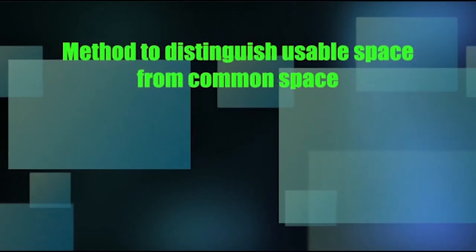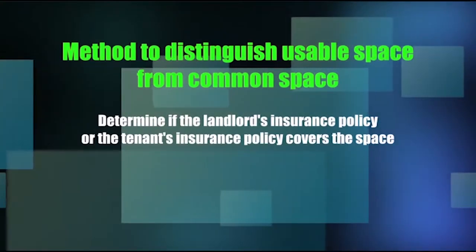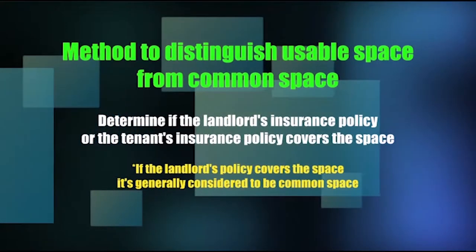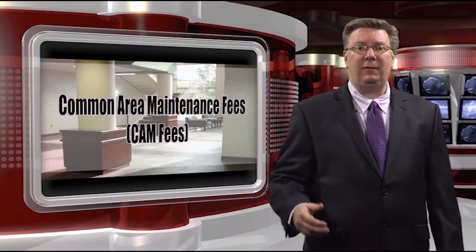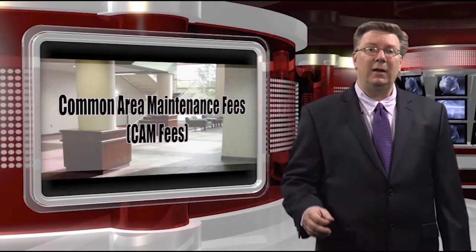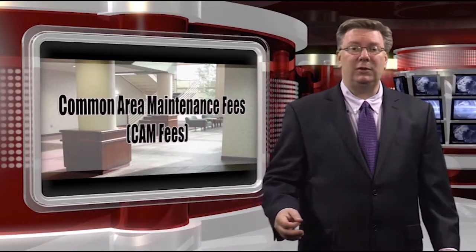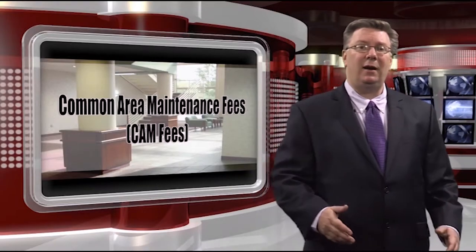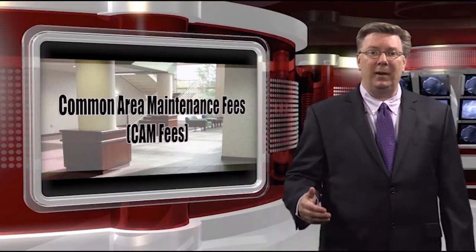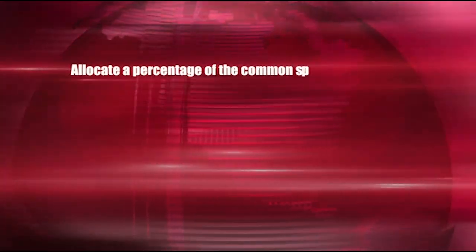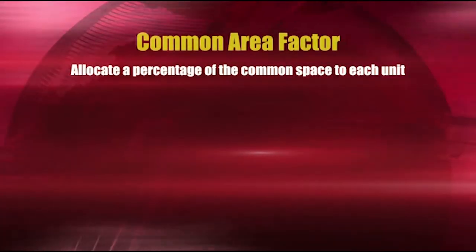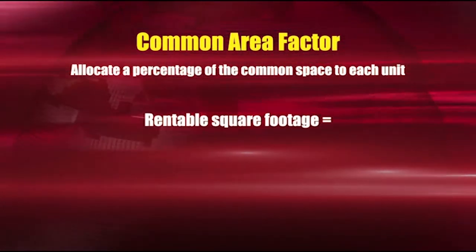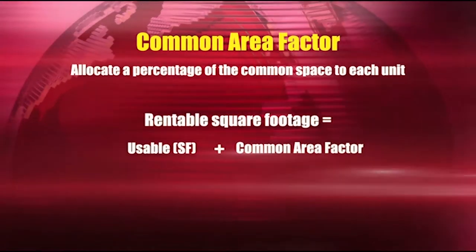One method of distinguishing usable space from common space is to determine if the landlord's insurance policy or the tenant's insurance policy covers the space. If the landlord's policy covers the space, it's generally considered to be common space. In some areas, it's typical for a landlord to charge only for the usable space and cover the cost of the additional building space in common area maintenance fees or CAM fees. Another method to cover the cost of common space is to allocate a percentage of the common space to each unit — a convention called charging a common area factor. The rentable square footage the tenant pays for is a combination of the usable square footage plus the common area factor.